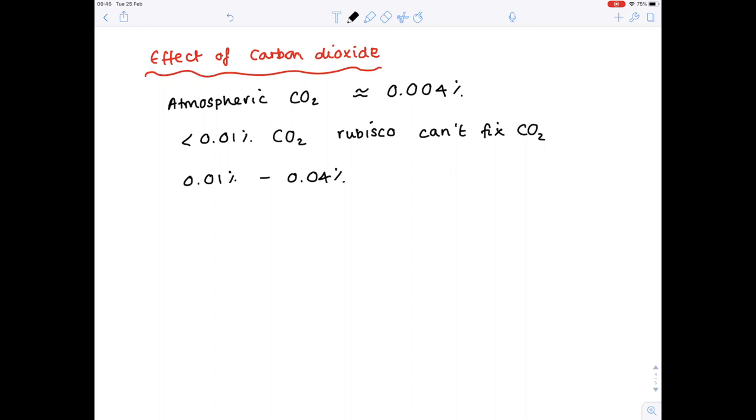And then as you increase that percentage of carbon dioxide to 0.04%, so between 0.01 and 0.04% carbon dioxide, you still find that there's a reduced rate of successful collisions between carbon dioxide molecules and the active site of the rubisco enzyme.